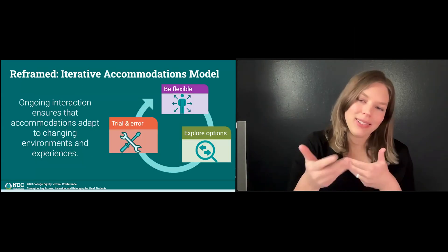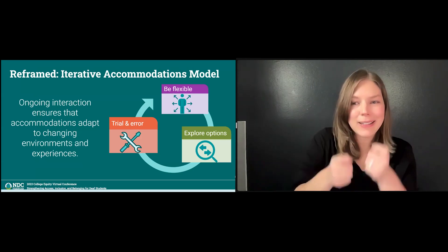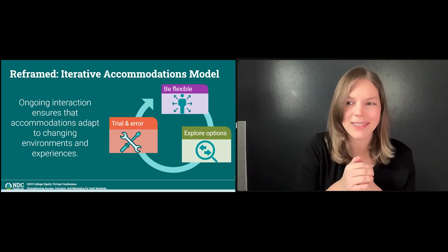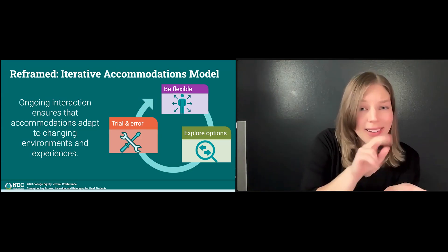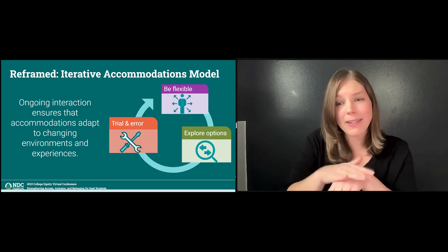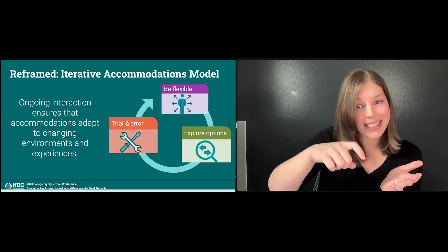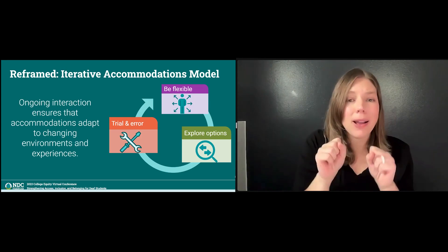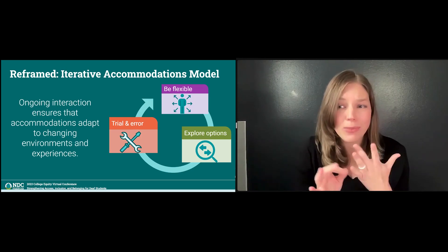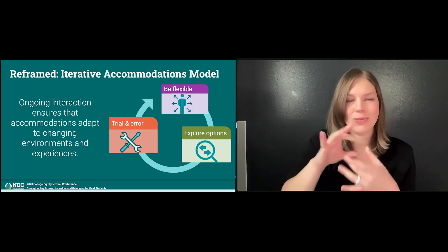The interactive process is not confined to initial interactions — it's an ongoing journey. As your students' needs evolve throughout their enrollment, the process needs to adapt accordingly. Ongoing interaction ensures that accommodations adapt to changing environments. Regular check-ins, data collection, and adjustments based on evidence ensure that accommodations remain aligned with the students' evolving needs. By adopting strategies such as being flexible, exploring options, and trial and error, this helps guard against biases and fosters more informed decisions.